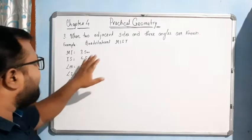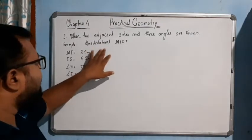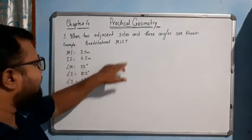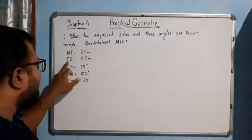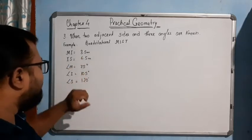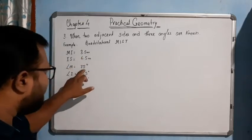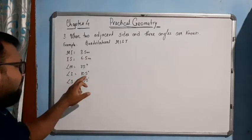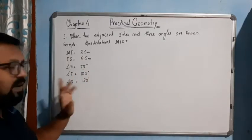I have taken the example from our NCERT book. We have to construct quadrilateral MIST where MI equals 3.5, IS equals 6.5, angle M equals 75 degrees, angle I equals 105 degrees, and angle S equals 120 degrees.